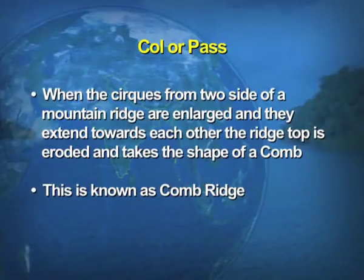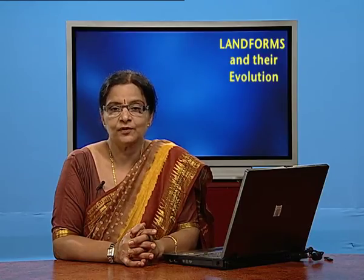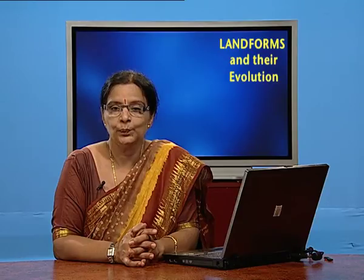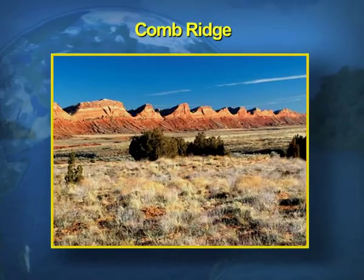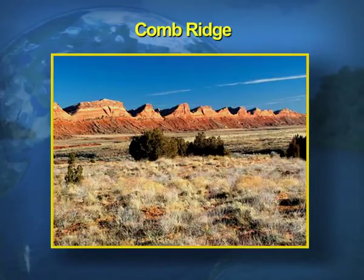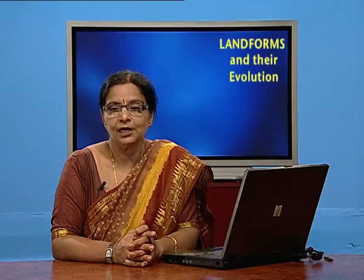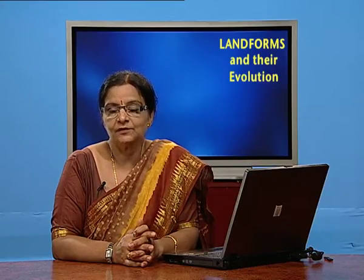Another feature is comb ridge. As the name indicates, it looks like a comb. When the cirques from two sides of a mountain ridge are enlarged and extend towards each other, the ridge top is eroded. When the top gets eroded, it takes the shape of a comb, and that feature is known as a comb ridge. You can see the visual on screen — the mountain ridge top has given a comb shape due to erosion by the enlargement of the cirques.